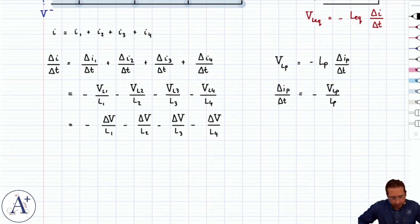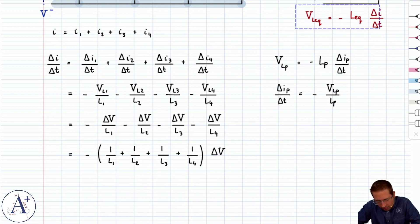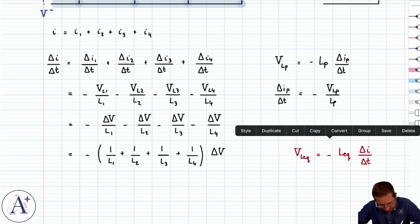And if we factor that out, we're going to find that this expression here is minus 1 over L1 plus 1 over L2 plus 1 over L3 plus 1 over L4 multiplied by delta V. And recall that we're trying to compare it to this term here, this equation.